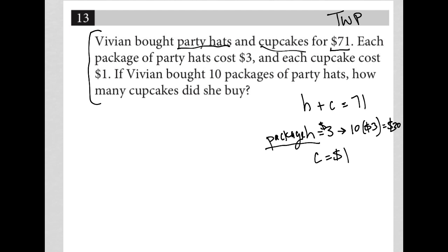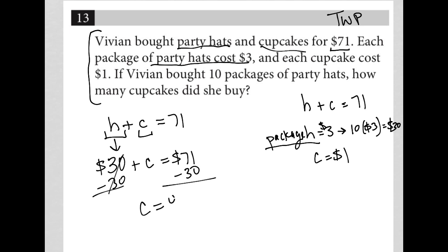So she spent $30 on hats. Again, H plus C equals 71. We know that the package of party hats cost $3 and each cupcake costs $1. She bought 10 packages of party hats, so for H we're spending $30. So we have $30 plus C equals $71, subtracting 30 from both sides, C equals 41.